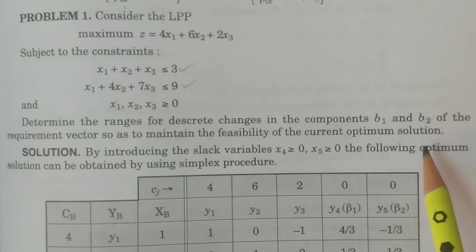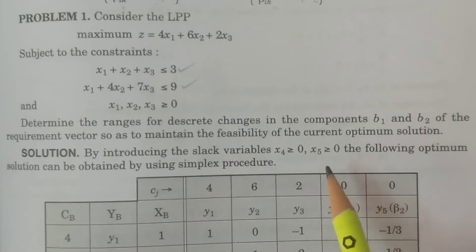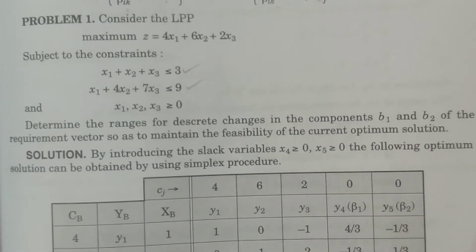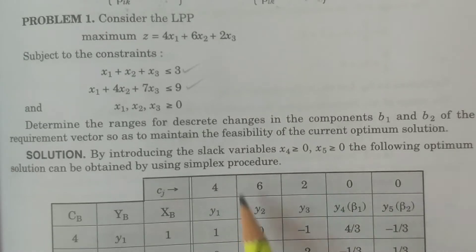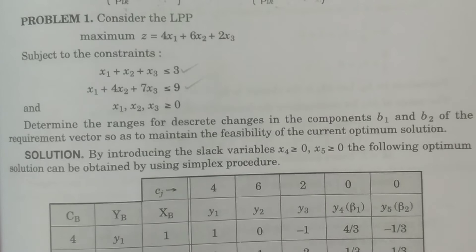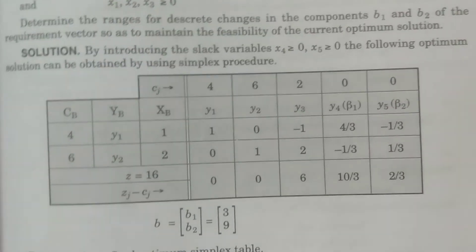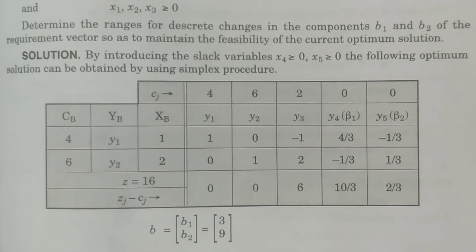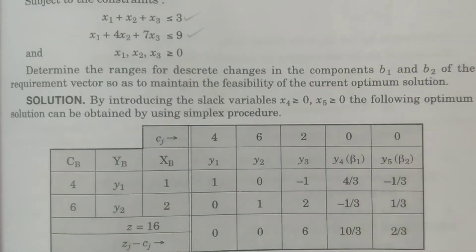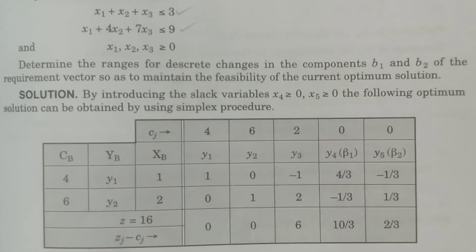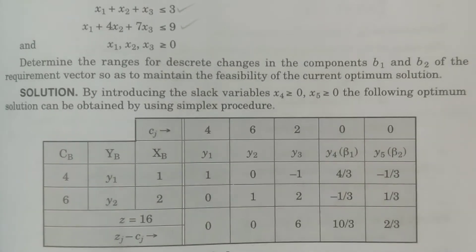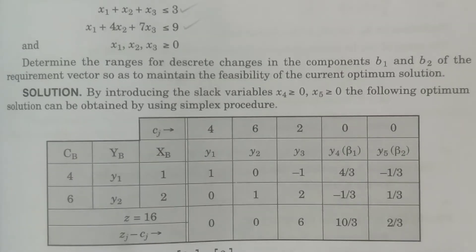As already discussed, the feasibility is one such aspect. If you observe and examine, that is the reason it was specified clearly to maintain the feasibility of the current optimum solution. What we have to do — as I explained in the previous problem as well — first of all you have to consider the given LPP where all the constraints are less than or equal to, then consider the simplex procedure and obtain the final optimum simplex table with the optimum solution.